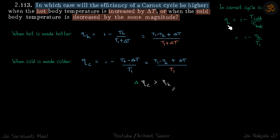We know the efficiency of a Carnot cycle is 1 minus the temperature of the cold reservoir divided by the temperature of the hot reservoir. So let's say it is 1 minus T2 by T1.